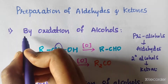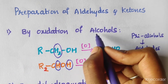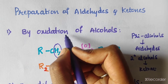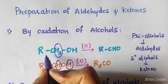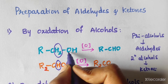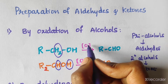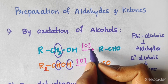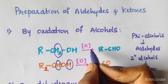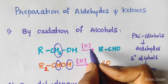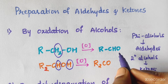The first method is by oxidation of alcohols. Alcohols on oxidation give aldehydes. The general formula of a primary alcohol is RCH2OH. If we oxidize this alcohol by using CrO3 — chromic oxide or chromic acid — we will get an aldehyde, RCHO.